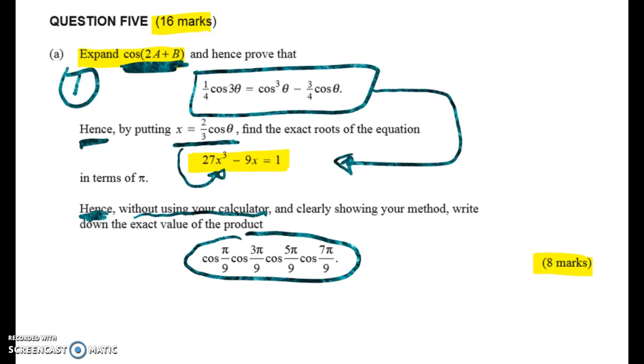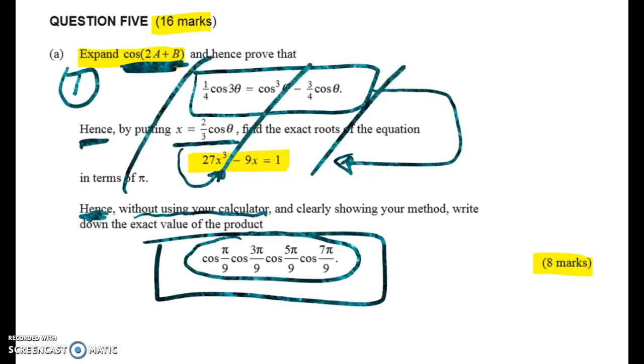And then hence again, without using your calculator, find the exact value of this product. So if you just looked at this bit here without these bits, you might look at this and think pi on nine, three pi on nine, five pi on nine, seven pi on nine. It looks like some kind of sequence or progression, but it's not going to be that hard.